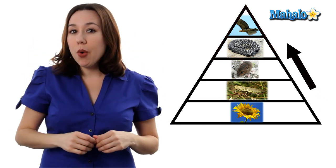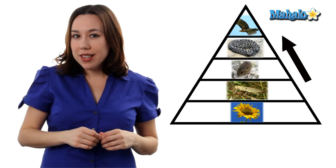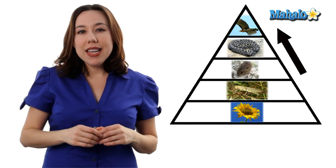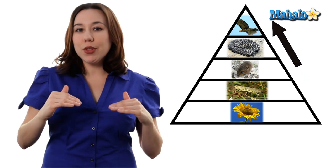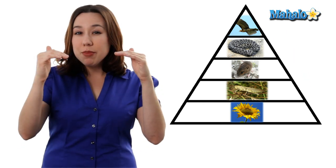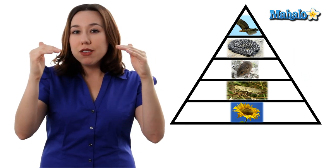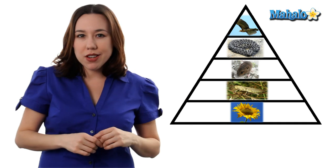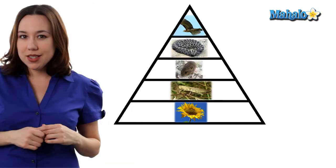As you go up the food chain, you start to lose more and more energy. In fact, each trophic level that you increase, you lose 90% of the energy originally harnessed from the sun.